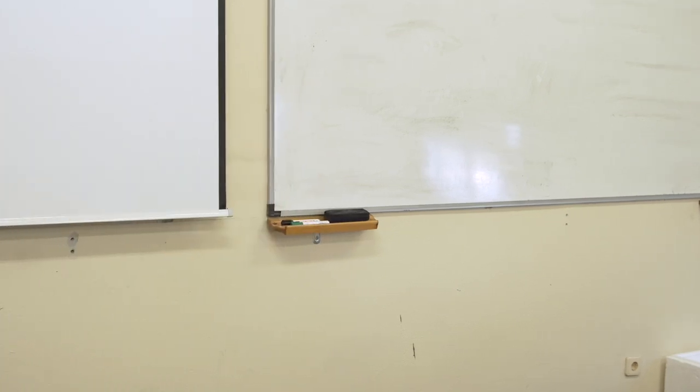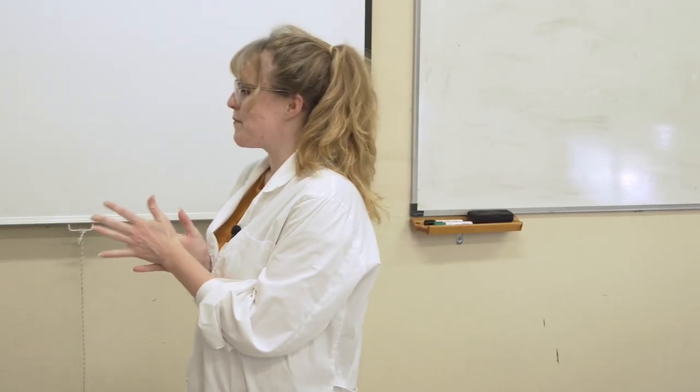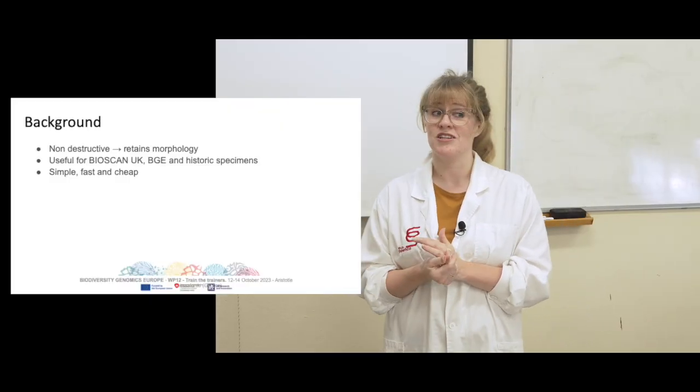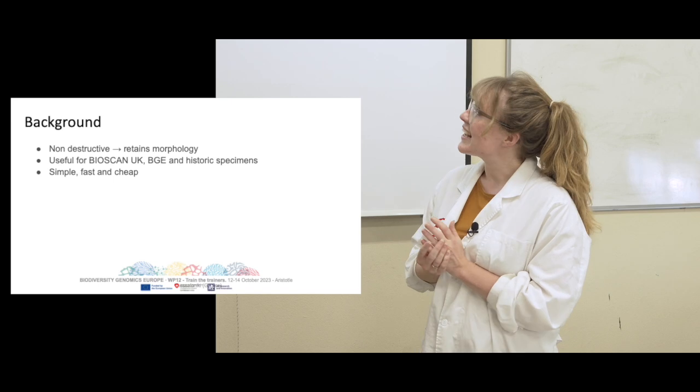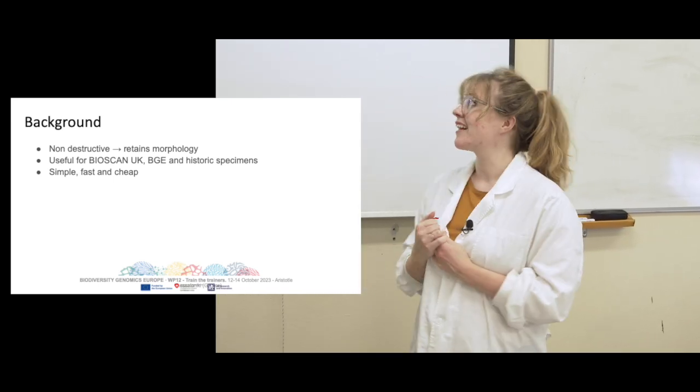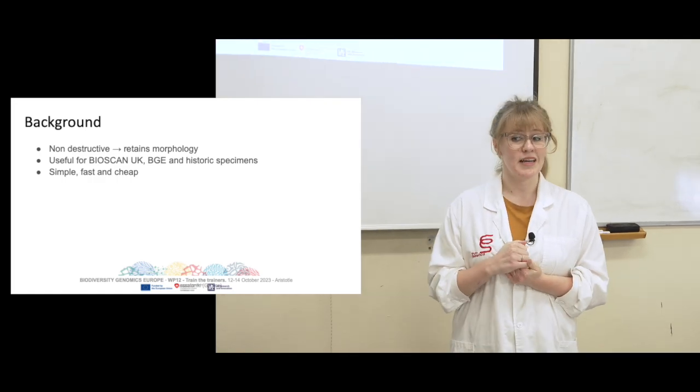So the first line is about the basic perk. This is that it's non-destructive, so we retain the morphology. I know a lot of you already know this stuff, but it's applicable for BGE samples, historic specimens, and the Bioscan UK project samples. It's very simple, very fast, well, like an overnight license, but it's not a lot of effort. And it's quite cheap. At the time it was created it was like 9p UK sterling per sample, so that's quite nice compared to some kits that have, you know, you buy kits and it's all a bit of a racket.